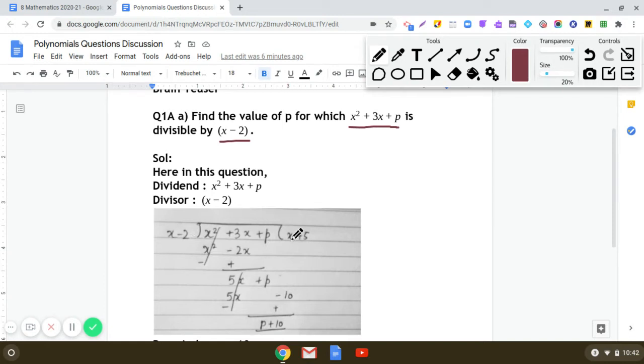In the quotient, first term will be x. When you multiply x by x - 2, you get x² - 2x. Now do the subtraction.